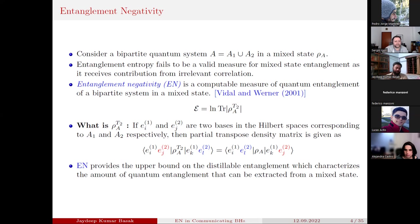In 2001, Vidal and Werner proposed entanglement negativity as a computable measure of entanglement for a bipartite mixed state. It is defined in this way, which is written in the first equation. Now this ρ^{T_2}_A is basically the partially transposed density matrix over one of the subsystems—in this case, the second subsystem. To understand that, first take e_1 and e_2 as two bases in Hilbert space corresponding to A_1 and A_2 respectively. Then the partial transpose density matrix is given by the second equation, where you can see the color coding where e_{2j} and e_{2l} have changed their positions in the right-hand side.